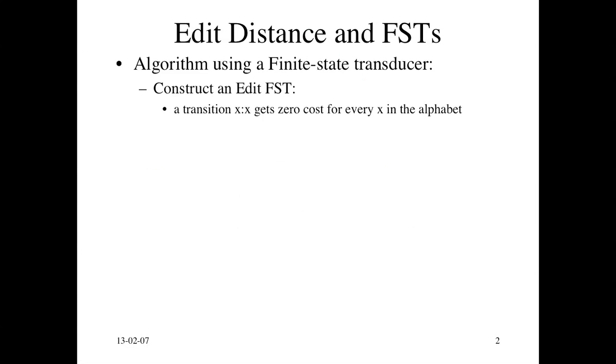An edit FST basically maps source strings to target strings, all possible source strings, all possible target strings, and gives them a cost. Each edit gets a cost. A transition of a character X to itself gets zero cost, so that's just equality. You can insert a character by having the input be an empty string and the output is a symbol X. And we want to give this insertion a cost of 1.